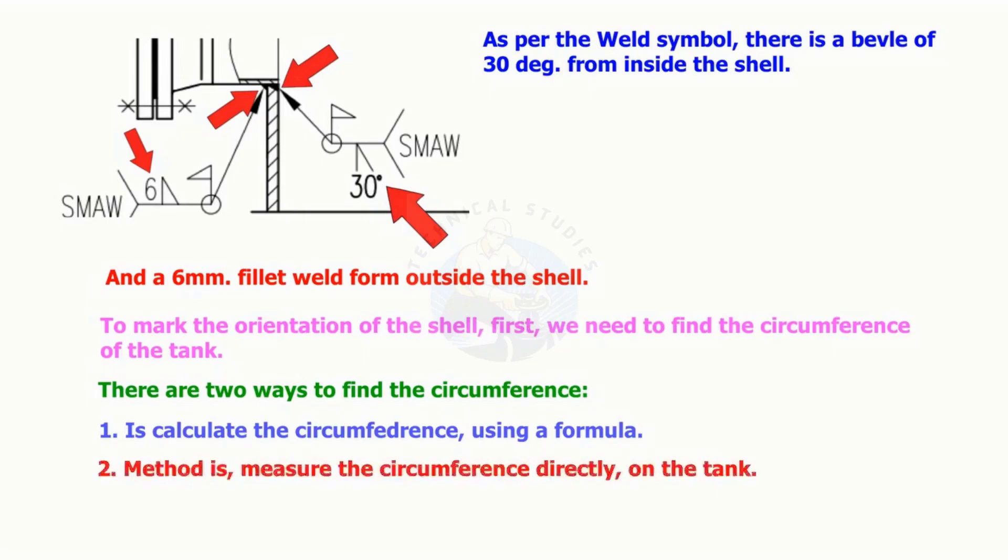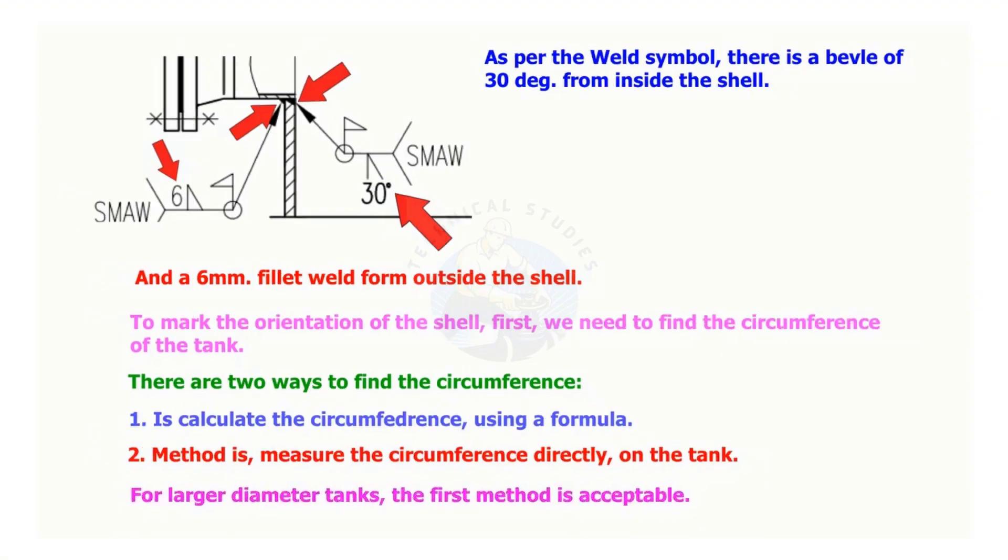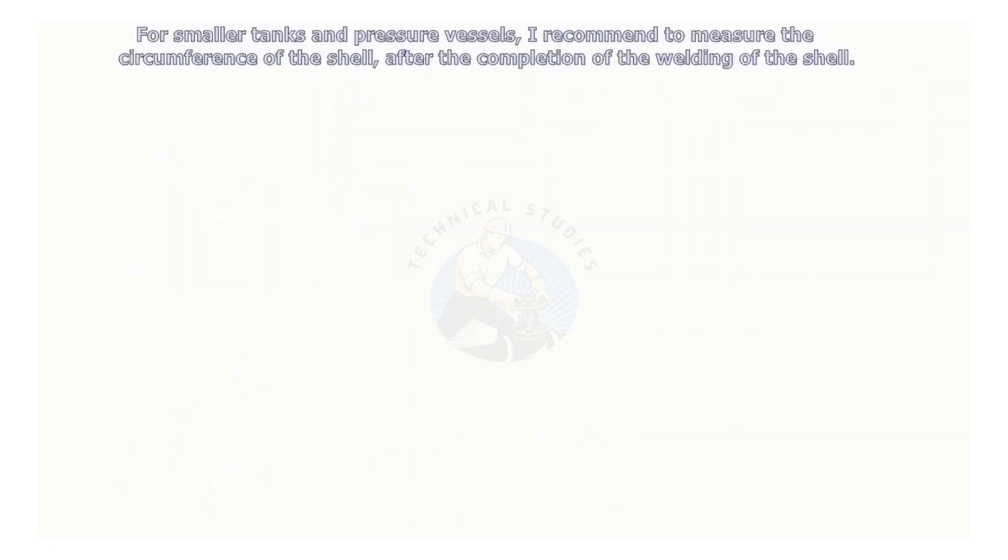For large diameter tanks, the first method is acceptable. For smaller tanks and pressure vessels, measure the circumference of the shell after completion of the welding.